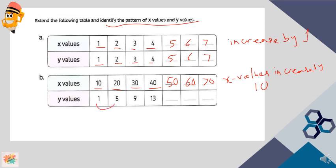For y values, one becomes five, five becomes nine, nine becomes 13. If we look, each time there is an increase by four. Each time it increases by four: one plus four equals five, five plus four equals nine, nine plus four equals 13. So if we look, 13 plus four is 17, 17 plus four is 21, 21 plus four equals 25.